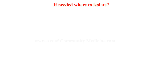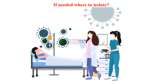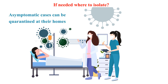If needed, where to isolate? Asymptomatic cases with exposure to COVID-19 positive patients can be quarantined at their homes, but are to be under strict surveillance by the government authorities.